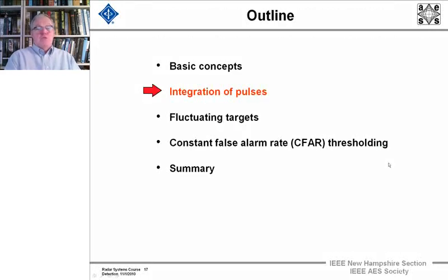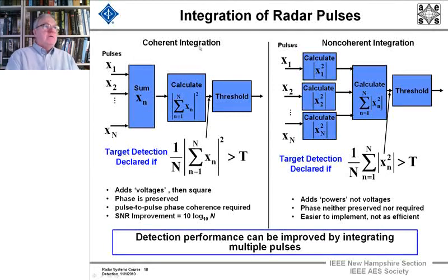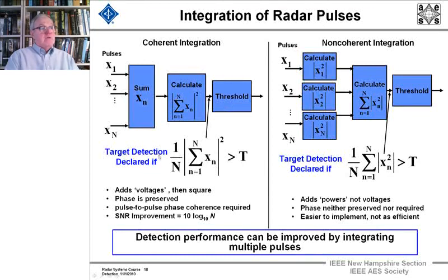For coherent integration, we add the voltages and then square them, preserving phase. The pulses come in, we sum them, square them, and then threshold. This is square law detection. We declare a target if (1/N) times the sum from 1 through N of the voltages, all squared, is greater than the threshold.